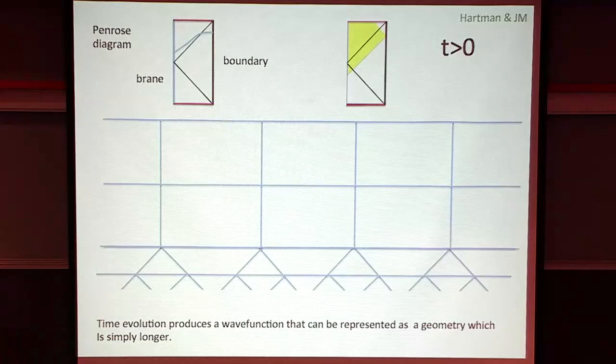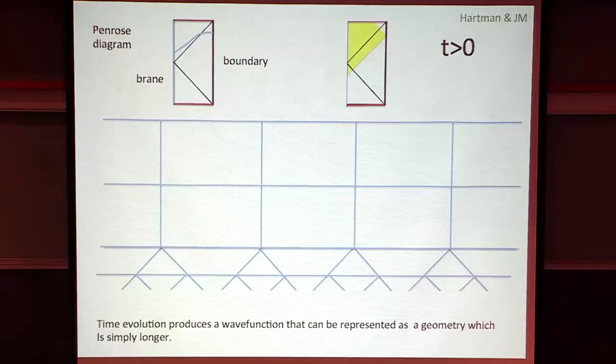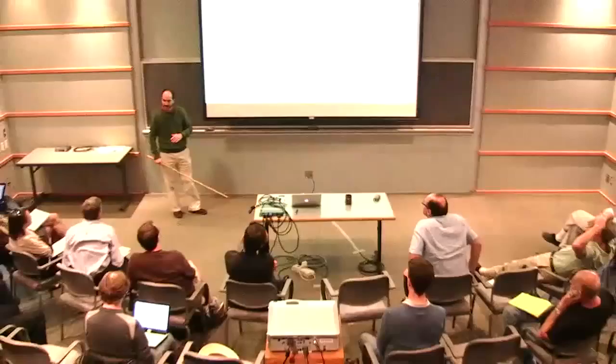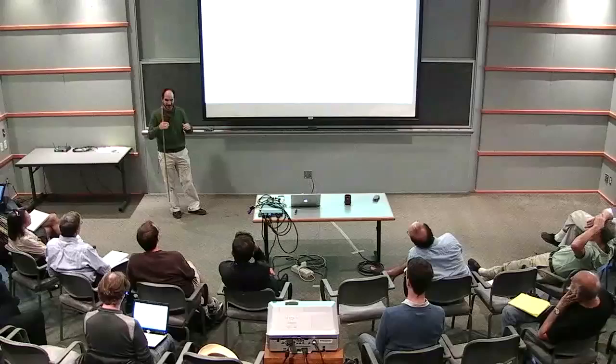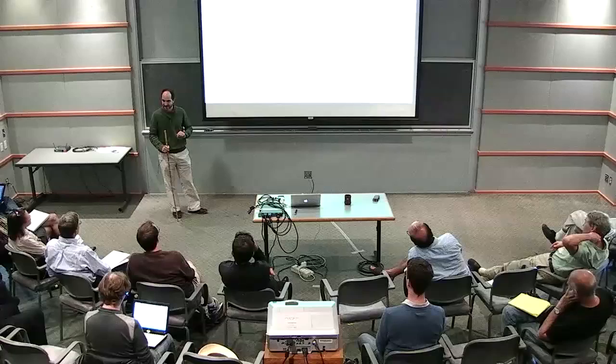That looks like time evolution in the infrared. Time evolution in the UV leaves this wave function invariant - we're thinking of these wave functions in the Schrödinger picture. We do time evolution and it leaves the ground state wave function the same. The disturbance in the bulk is going to propagate out.